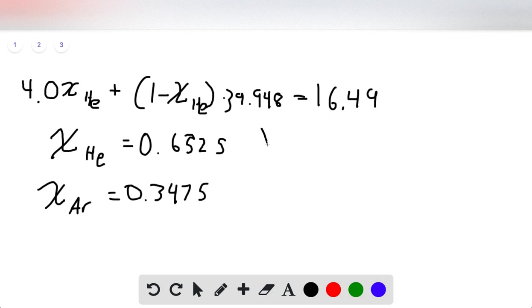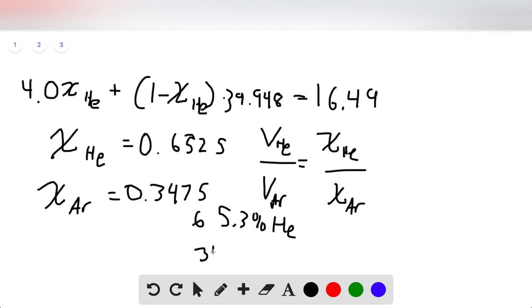We use the fact that the volume of helium over the volume of argon equals the mole fraction of helium over the mole fraction of argon. When we plug in our two mole fractions, we get the volumes in the same ratio. That means we have 65.3% helium and 34.8% argon, from converting these mole fractions into percentages, and those are our final answers.